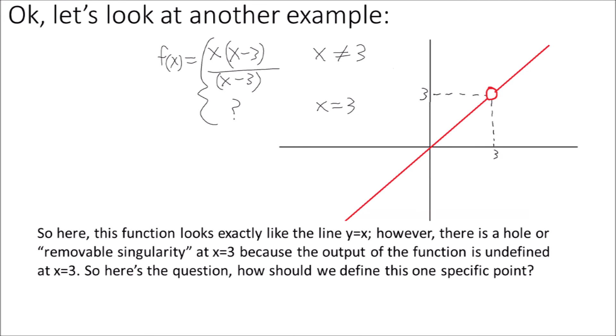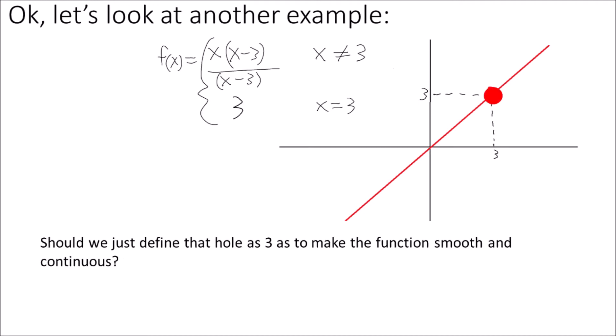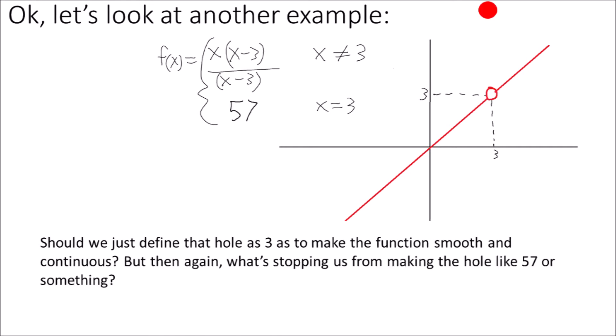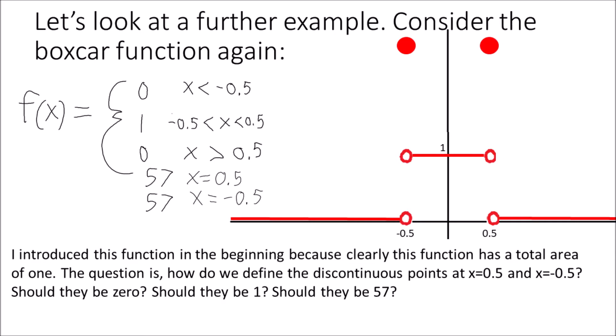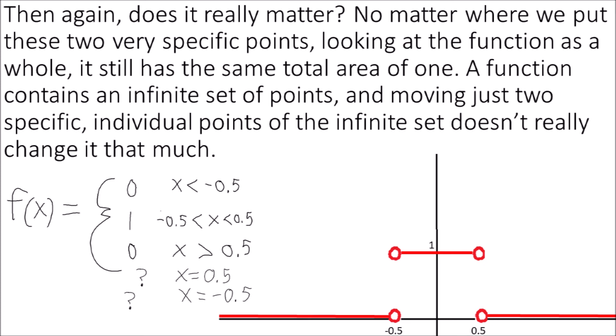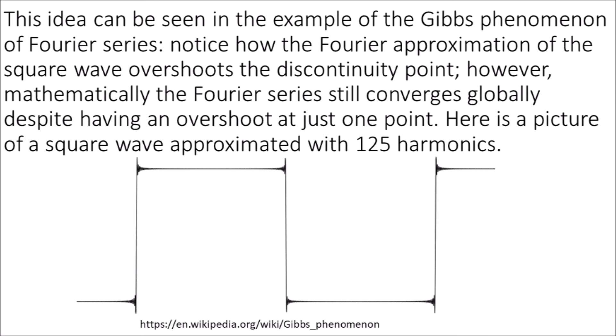Here, this function looks exactly like the line y = x. However, there is a removable singularity at x = 3 because the output is undefined there. How should we define this one specific point — should we define it as 3 to make the function smooth and continuous? Consider the boxcar function again — how do we define the discontinuous points at x = 0.5 and x = −0.5? Should they be 0? Should they be 1? No matter where we put these two specific points, the function still has the same total area of 1. A function contains an infinite set of points, and moving just two specific individual points doesn't really change it that much.